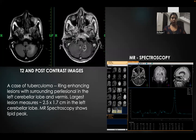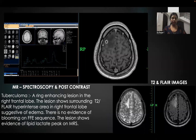This is an image of tuberculoma. T2 and post-contrast images show ring enhancing lesions with surrounding perilational edema in the left cerebellar lobe and vermis. The largest lesion is noted in the left cerebellar lobe. MR spectroscopy in the same patient shows a lipid lactate peak. In another case of tuberculoma, a ring enhancing lesion is noted in the right frontal lobe with surrounding T2 FLAIR hyperintensity suggestive of perilational edema. There was no evidence of blooming on FFE sequence, and the lesion shows evidence of lipid lactate peak on MRS.